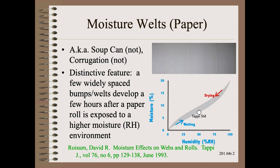As the paper takes on moisture from the air, it tries to grow in width. However, since the outer layer or layers are locked on to their neighbors beneath, they are not free to move their edges out. They take the extra width by moving up instead of out. These physics are covered in my Web 101 school, my 1993 TAPPI Journal article, and in many other places.